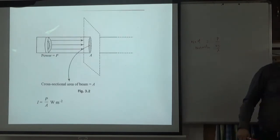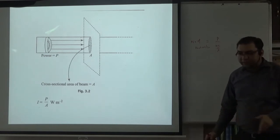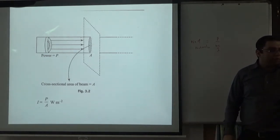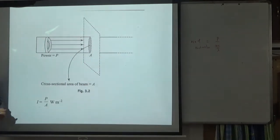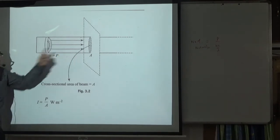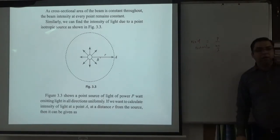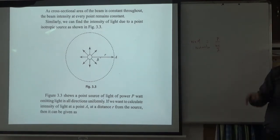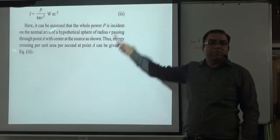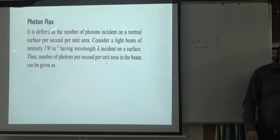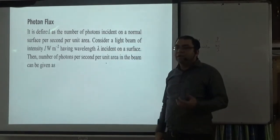Next: intensity of light. Intensity is defined as energy per second per unit area. For a torch, intensity depends on power and the area illuminated. If light spreads spherically, the area is 4πr². So intensity equals power divided by area — specifically power divided by 4πr² for a point source.